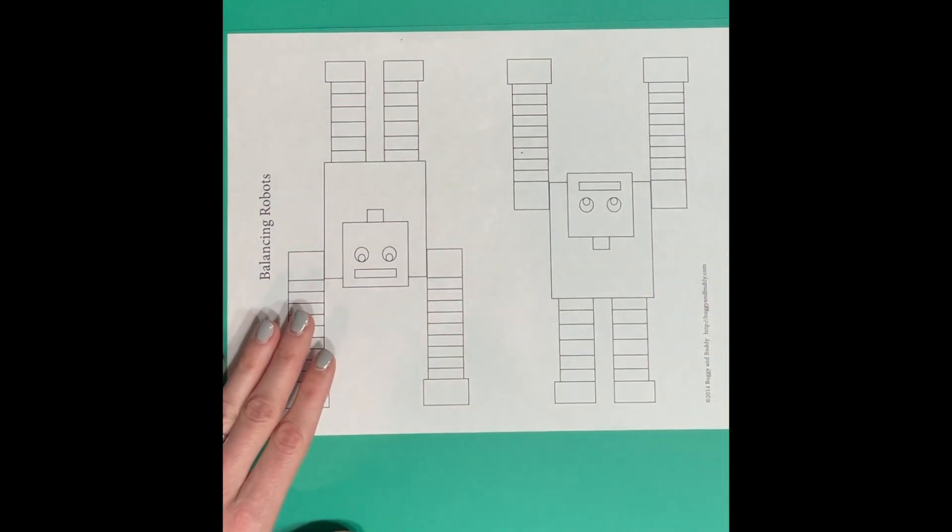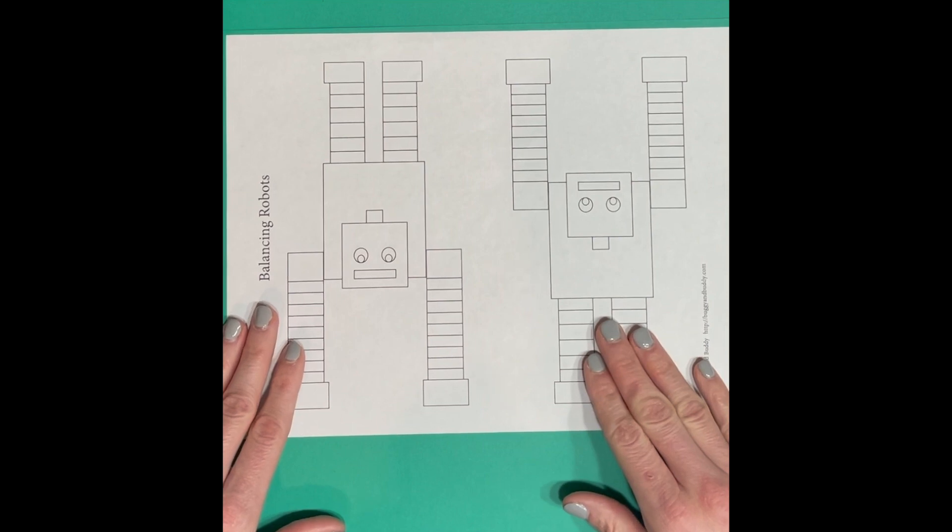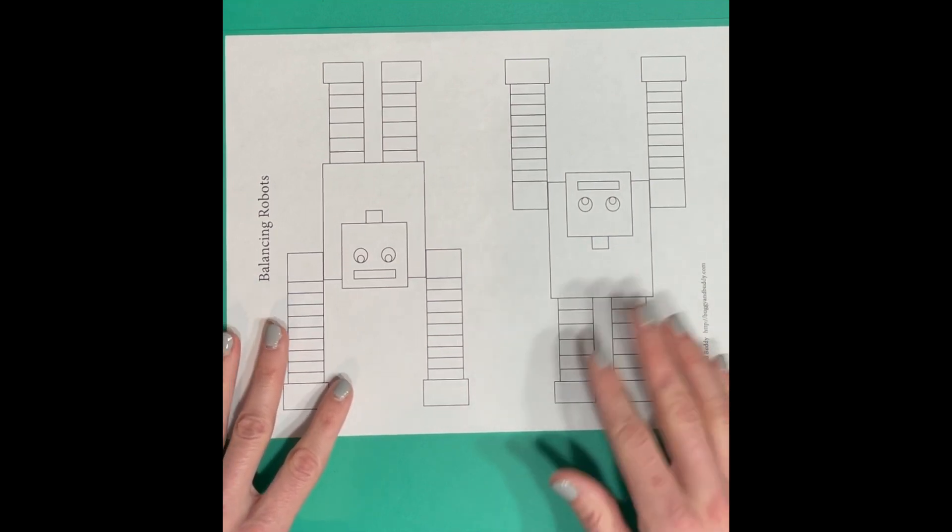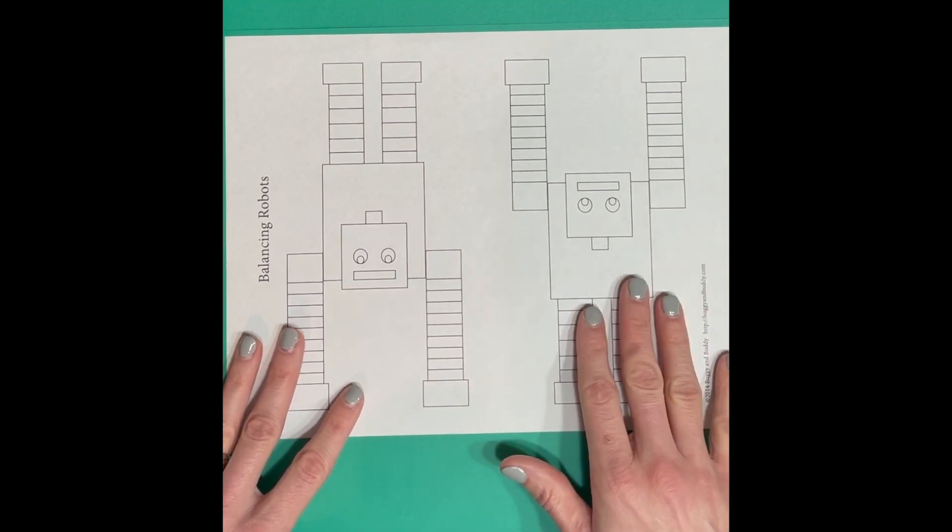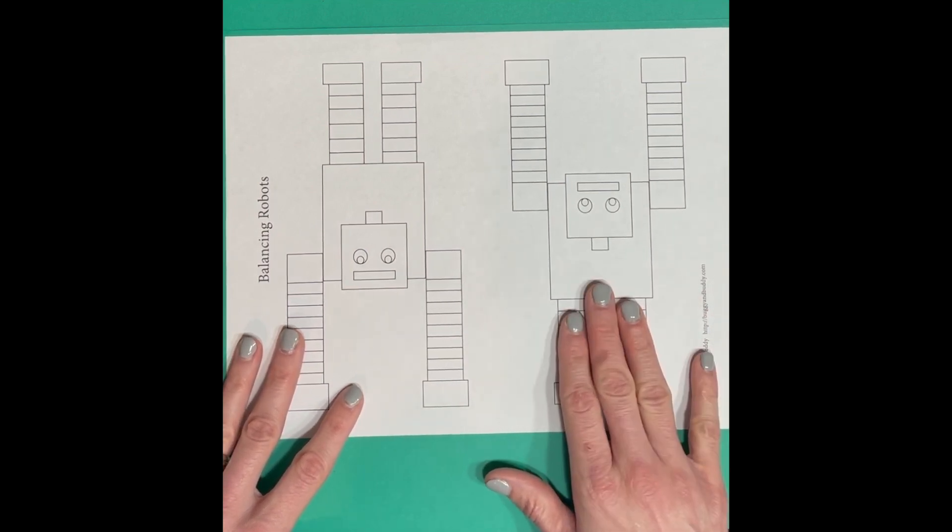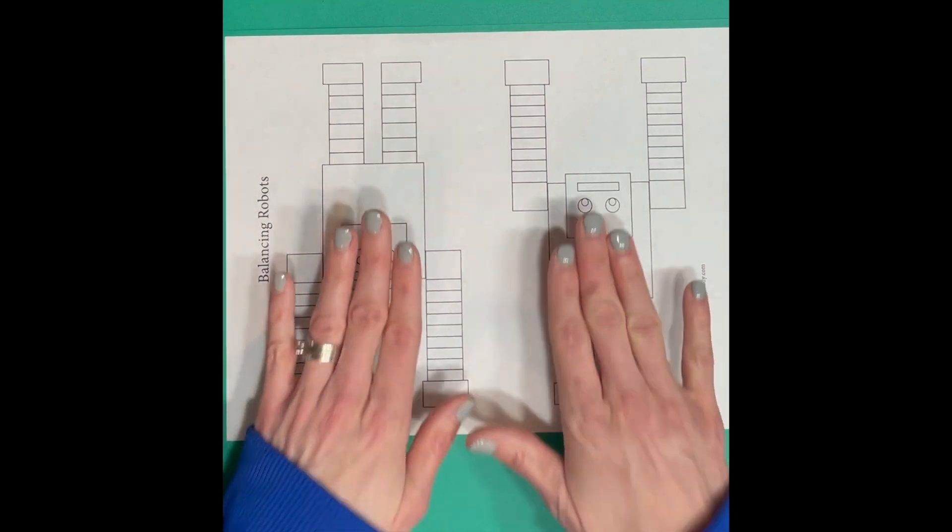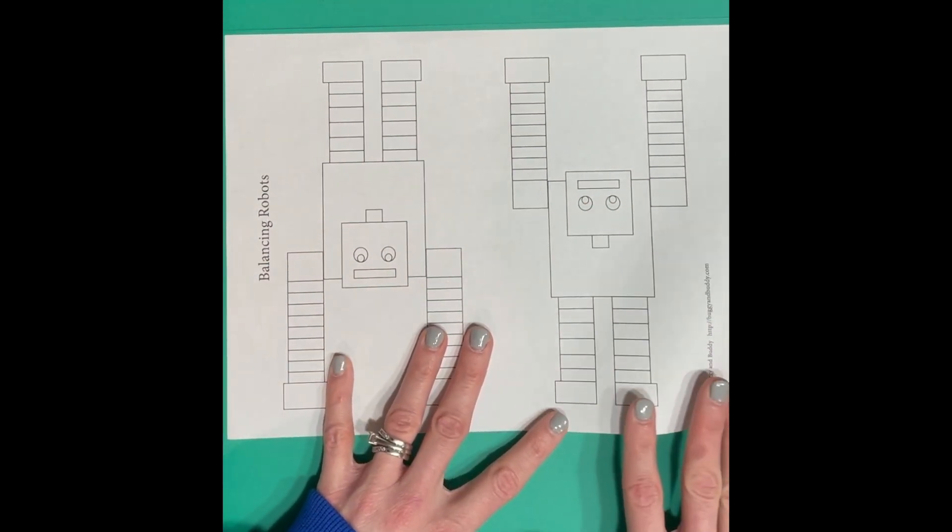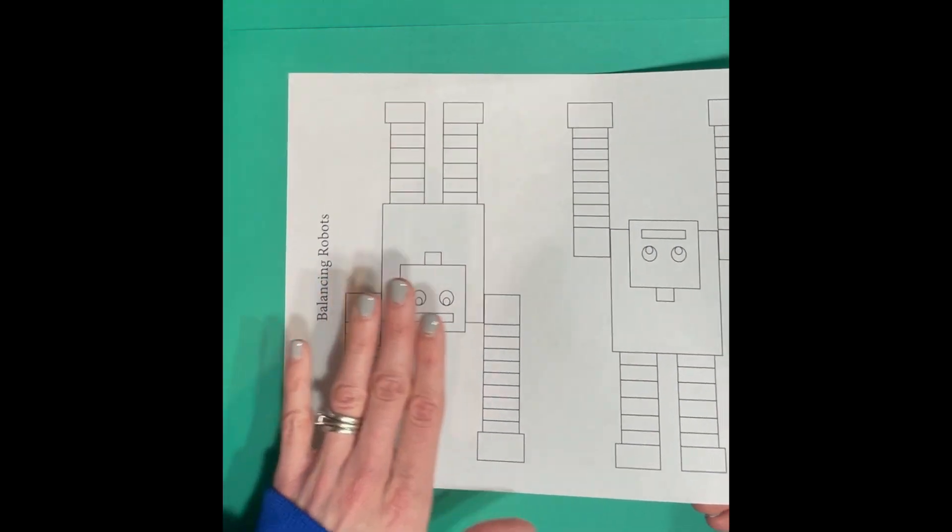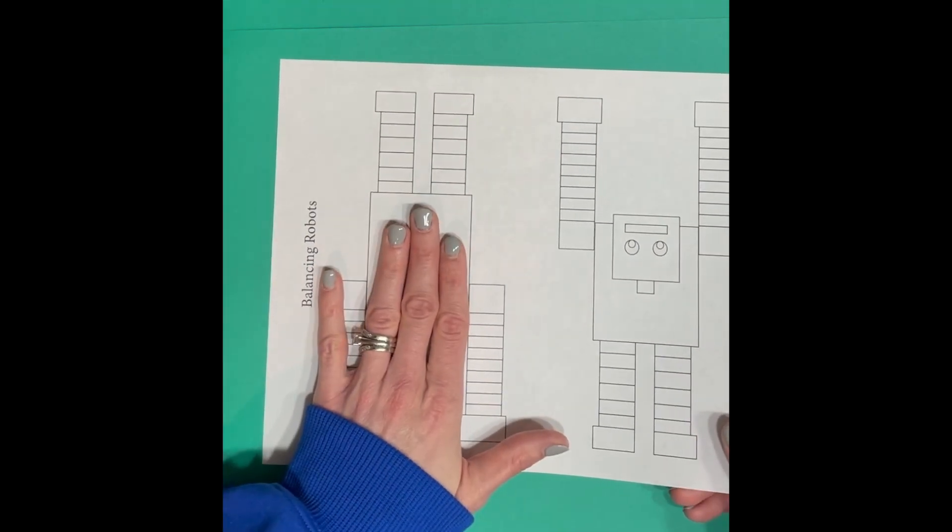If you're going to color it in, you might want to do that first. It'll be easier to color it in and then cut it out. You can color them different colors. You can only use one if you want, or you can use two robots when we do this activity. I'll explain why as we go.